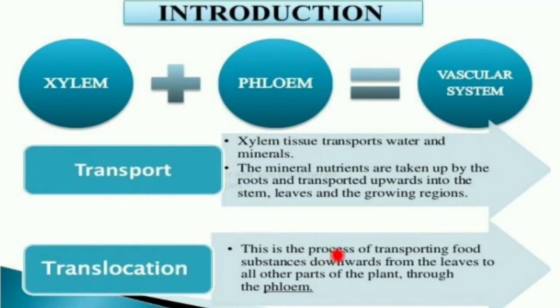Translocation is a process of transporting the food substances from the leaves to the various parts of the plant through phloem.